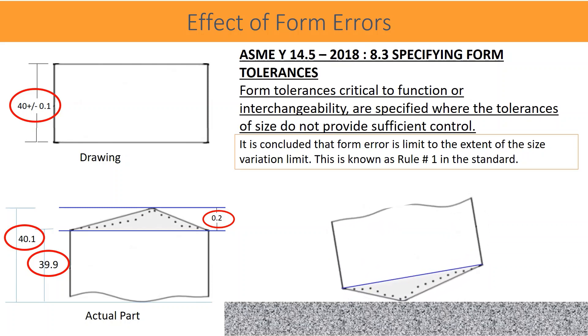This is known as Rule Number One in the standard. This form variation affects functionality as well as interchangeability. This large variation leads to the rocking of the part sometimes, because of the large size variations allowing large form tolerance.